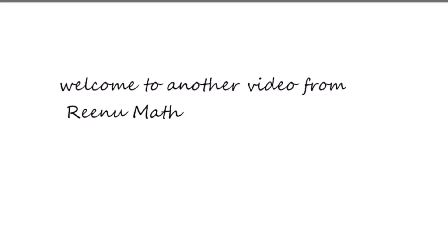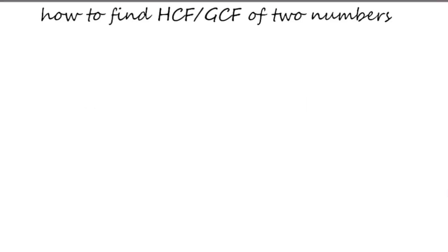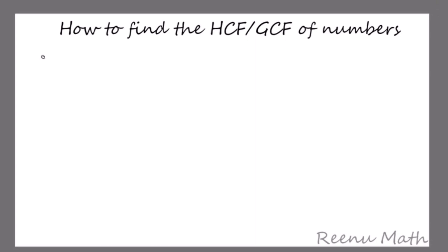Welcome to another video from Renew Math. Today we are going to learn how to find the highest common factor, which is called HCF, or greatest common factor, which is called GCF, of two numbers. HCF and GCF are synonyms — both terms mean the same thing. Here we are going to take two examples: first, finding the HCF of two numbers, and then finding the highest common factor of three numbers. Let's get started.